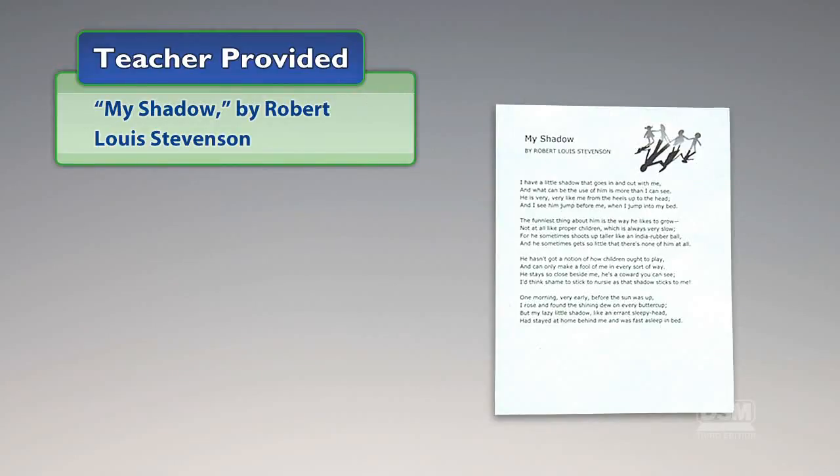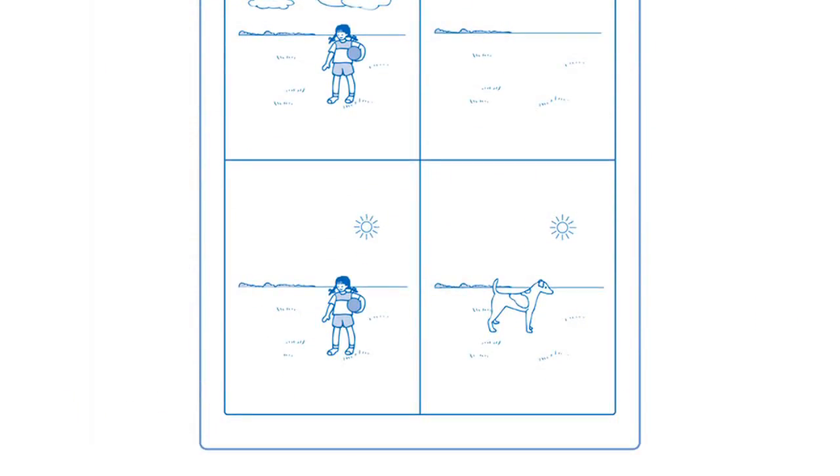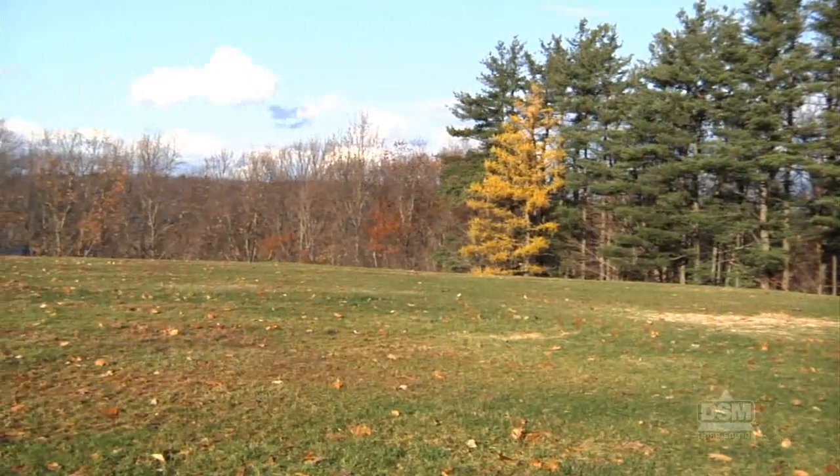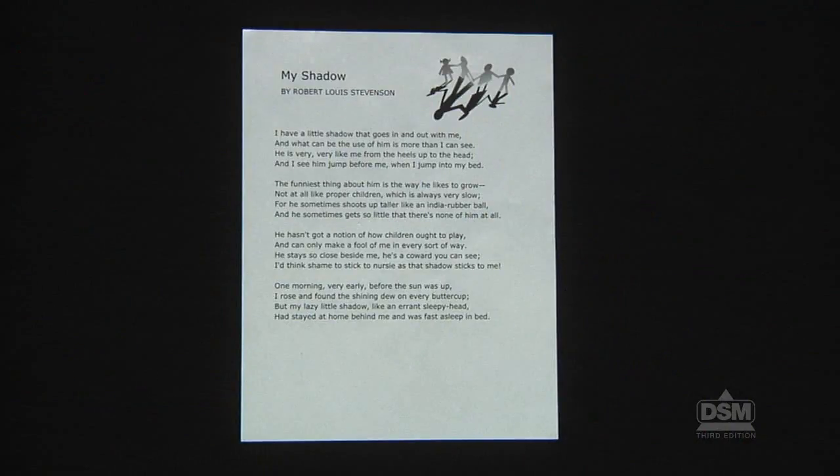You will also need to provide 'My Shadow' by Robert Louis Stevenson. To prepare for the activity, make a copy of Activity Sheet 1 for each student. This activity must be done on a sunny day, although a few fair weather clouds are not a problem. Select an outdoor area where students will be able to see their shadows, and obtain a copy of the poem 'My Shadow' by Robert Louis Stevenson.